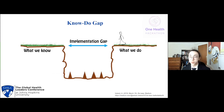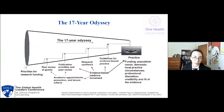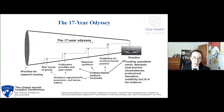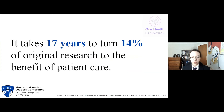These disparities lead to what's known as the know-do gap — the gap between what we know, what's circulating around the scientific community and has been researched, and what we do, what's practiced clinically. This implementation gap is often referred to as the 17-year odyssey, because it can take between 17 to 20 years for an evidence-based intervention, or EBI, to be moved from research into practice. Only a small fraction of these EBIs even make it into practice. The main takeaway is that it takes around 17 years to turn 14% of original research to the benefit of patient care, representing a lot of loss of investment.